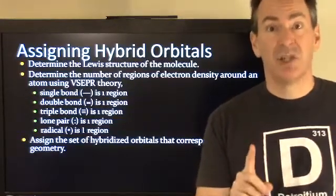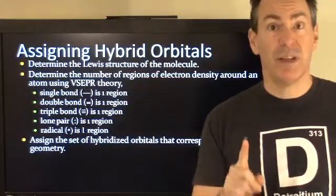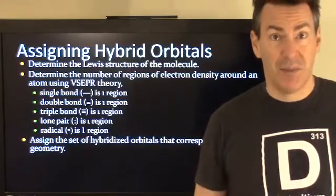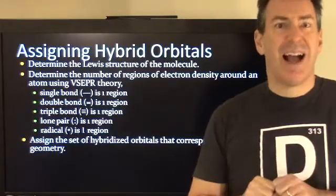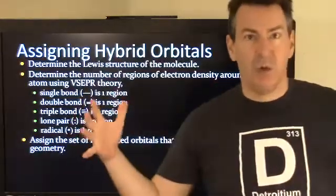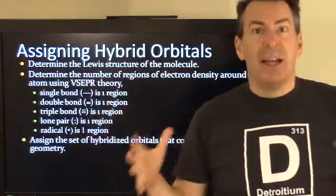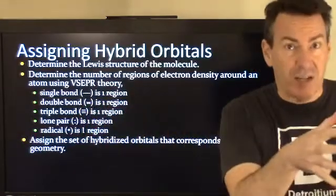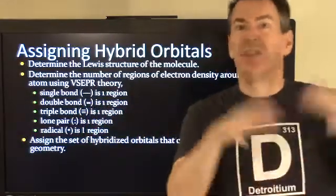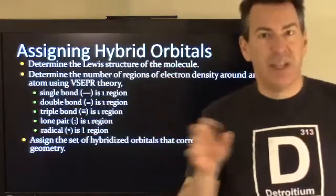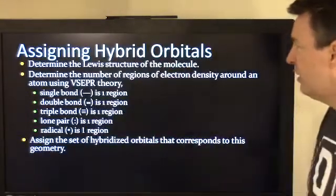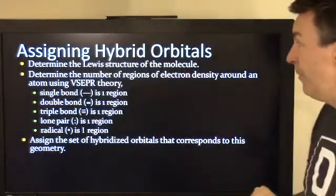Here's the key: you want to make sure you're only doing this for one atom at a time. You're not applying hybridization to the entire molecule. It's just to this carbon atom, or to this oxygen atom, or to this nitrogen atom, and so on. We can assign hybridization at each one of those, so keep that in mind.